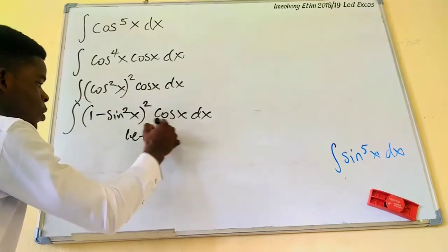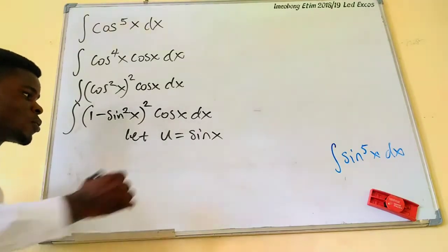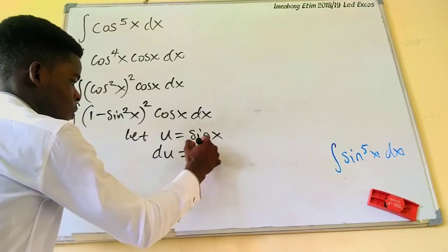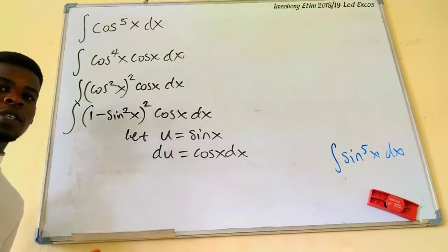So let u be equal to sine of x. By doing this, I can differentiate u. I'm going to have du is going to become cosine of x dx. So from here, I can plug this in to the integral.